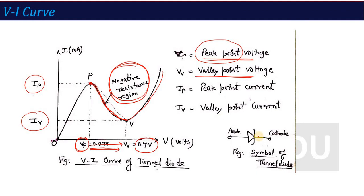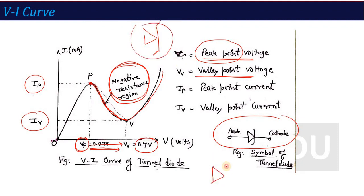The symbol of the tunnel diode has two pins in the same direction — unlike the Zener diode symbol — and this is the symbol used for tunnel diode. The VI curve can be explained in three parts: when voltage is less than the peak point voltage, when voltage is greater than peak point but less than valley point, and when voltage is greater than the valley point voltage.